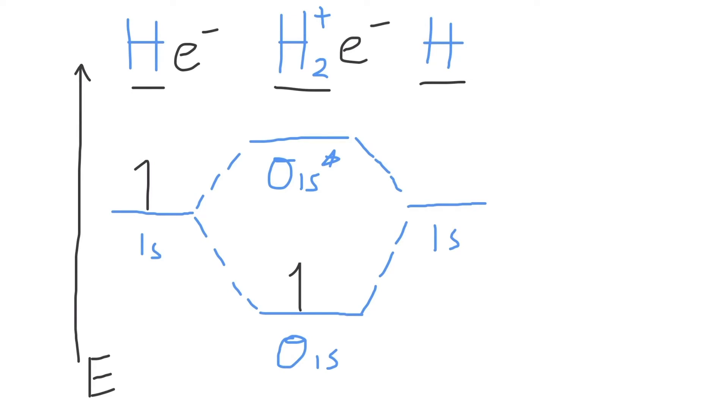Now what is the bond order for H2 plus? The bond order describes the stability of a bond or the strength of a bond and is directly related to the number of electron pairs involved in a bond in H2. So let's calculate the bond order. Bond order is equal to one half the number of bonding electrons minus the number of antibonding electrons.